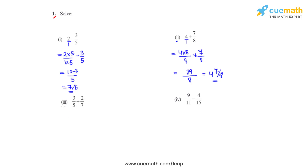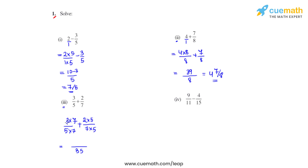Coming to the third bit, we have different denominators. The LCM of 5 and 7 is 35, so we need to make both denominators 35. For the first fraction, we multiply 7 to the numerator and 7 to the denominator. For the second fraction, we multiply 5 to the numerator and 5 to the denominator. So 5 sevens are 35 and 7 fives are 35. Taking the common denominator as 35, 7 threes are 21 and 5 twos are 10. So 21 plus 10 gives us 31, and the answer for the third bit is 31 over 35.